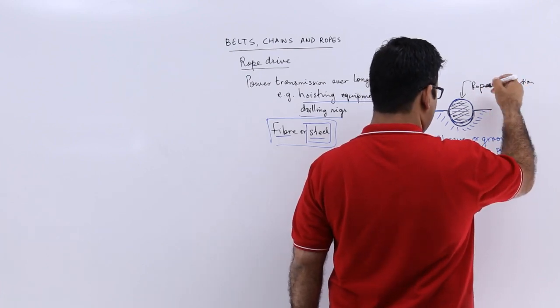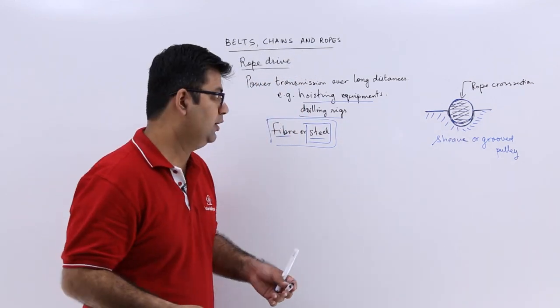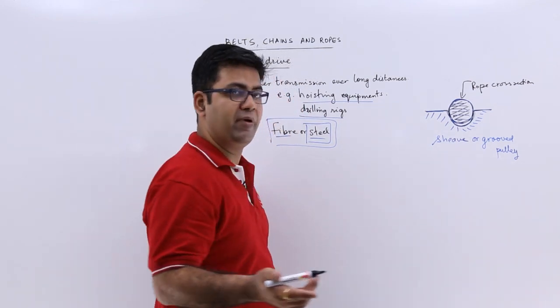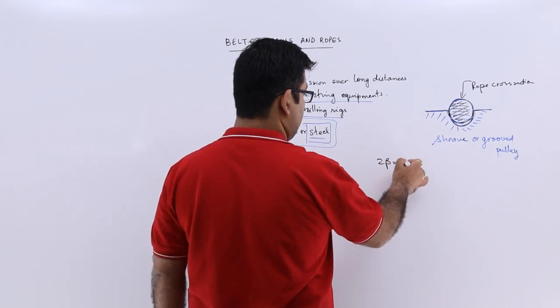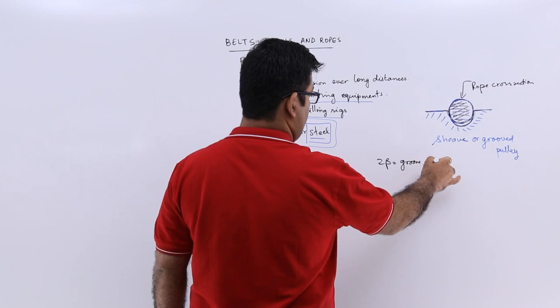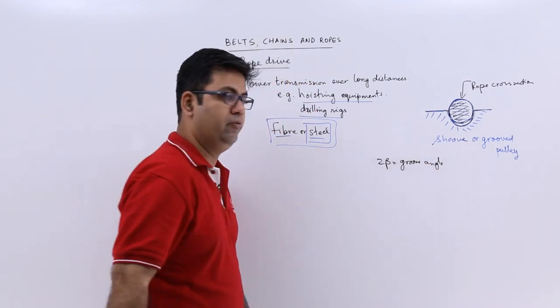Now because it has a groove inside it, there must be a groove angle. So let us say the half groove angle is beta. The full groove angle is 2 beta. So this is the groove angle.